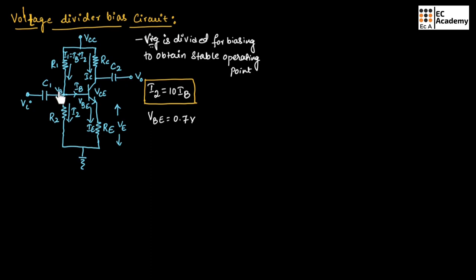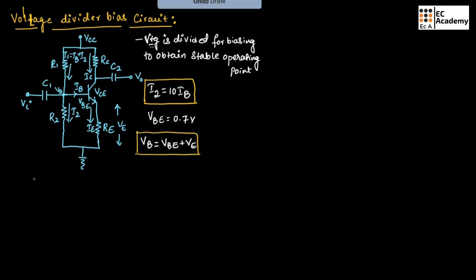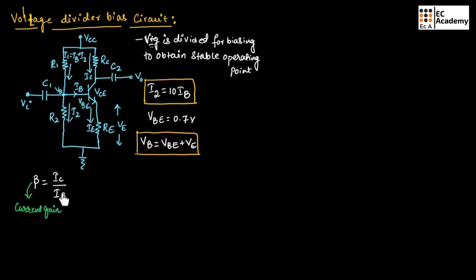Vb will be equal to Vbe plus Ve. Also, beta (the current gain) can be given as Ic divided by Ib — that is, output current divided by input current.